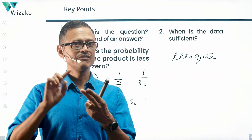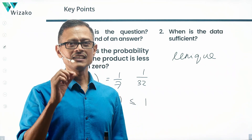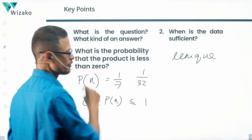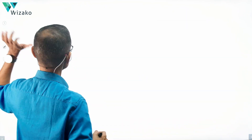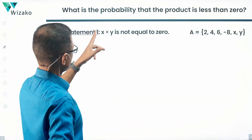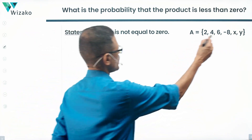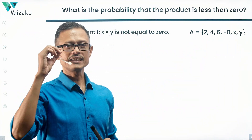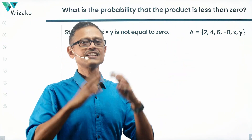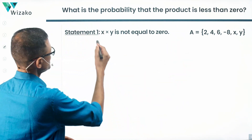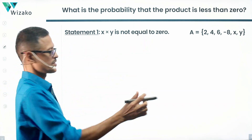Let's look at Statement 1 and see whether it gives a unique value for the probability that the product of those two numbers is negative. Statement 1 says X × Y ≠ 0. Set A comprises {2, 4, 6, -8, X, Y}, all distinct integers. X × Y ≠ 0 essentially means neither X nor Y is zero.